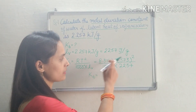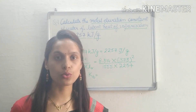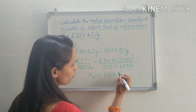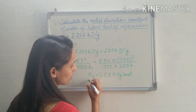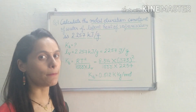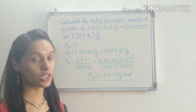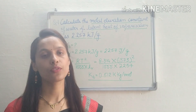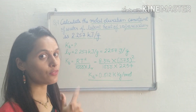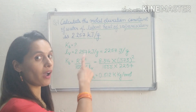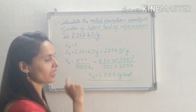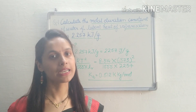In this way we can calculate the molal elevation constant using the latent heat of vaporization. However, we must check whether the latent heat of vaporization is given per gram or per mole. If it is given per mole, the formula becomes Kb = MRT² / (1000 × ΔvapH). But here it is per gram, so we use the first formula. Now we will do our next numerical.